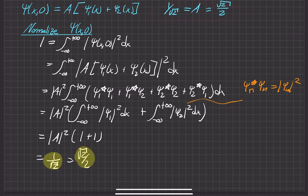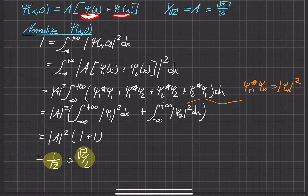This is exactly what we expected qualitatively — it just makes sense. Half the time we expect to measure the particle to be in the state of wave function one, and the other half of the time in the state of wave function two.